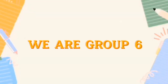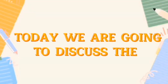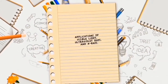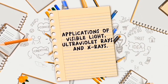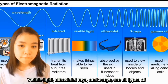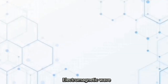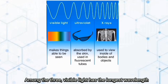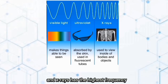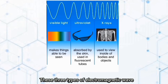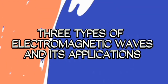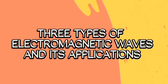Good day, everyone! We are Group 6. Today, we are going to discuss the Applications of Visible Light, Ultraviolet Rays, and X-Rays. Visible Light, Ultraviolet Rays, and X-Rays are all types of electromagnetic wave. Among the three, visible light has the longest wavelength and X-Rays has the highest frequency. These three types of electromagnetic wave have many different uses. Now, let's define these three types of EM waves and their applications.